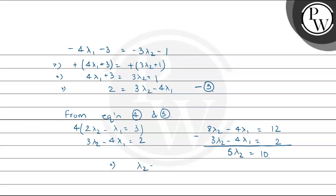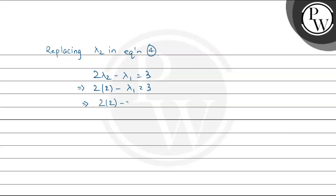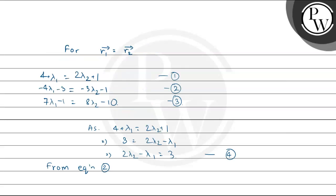Subtracting equation 5 from the scaled equation 4: (8λ2 − 3λ2) = 12 − 2, so 5λ2 = 10, which gives λ2 = 2. Substituting λ2 = 2 back into equation 4: 2(2) − λ1 = 3, so 4 − 3 = λ1, hence λ1 = 1.